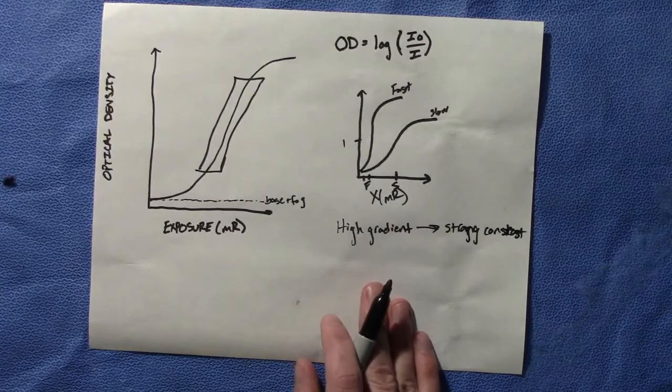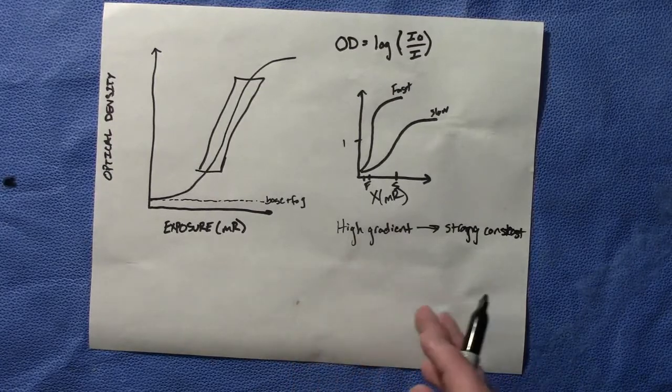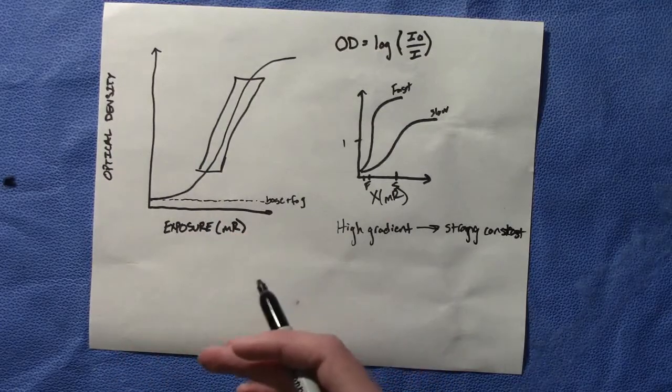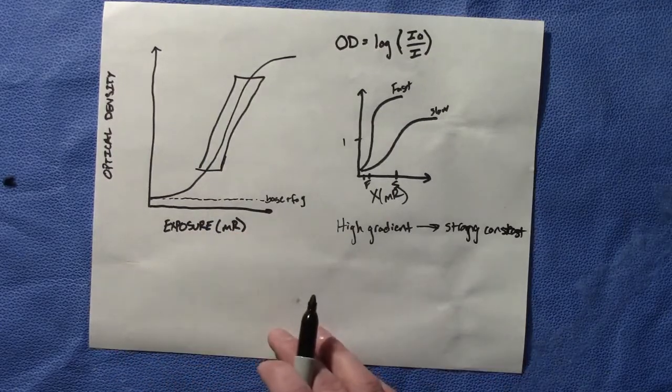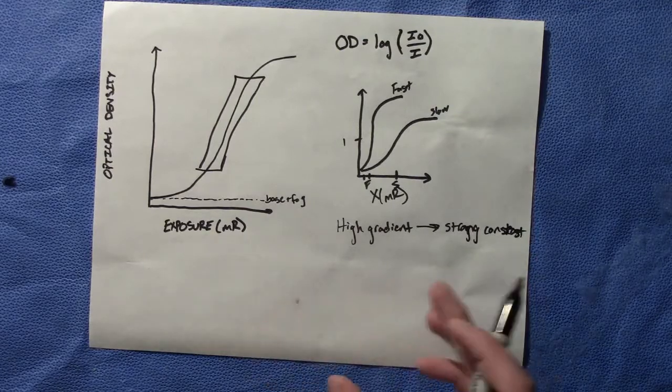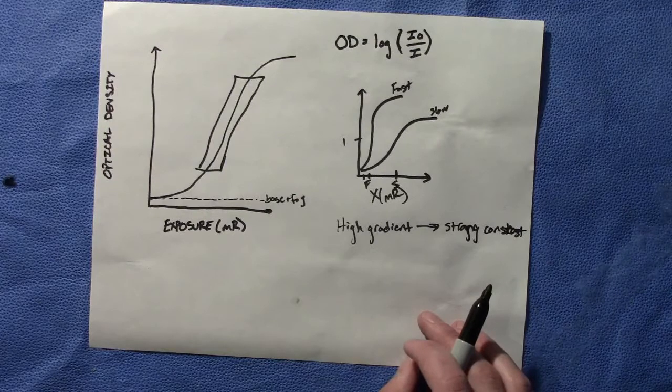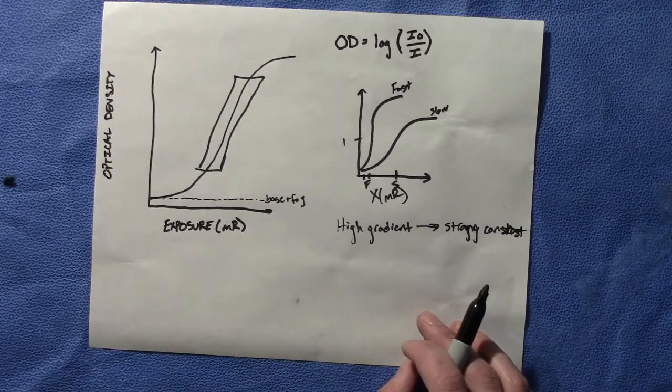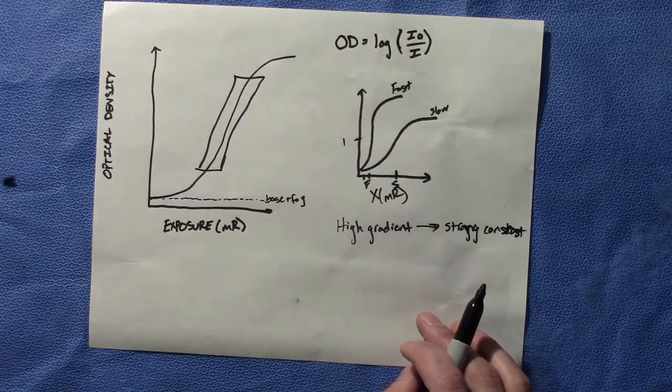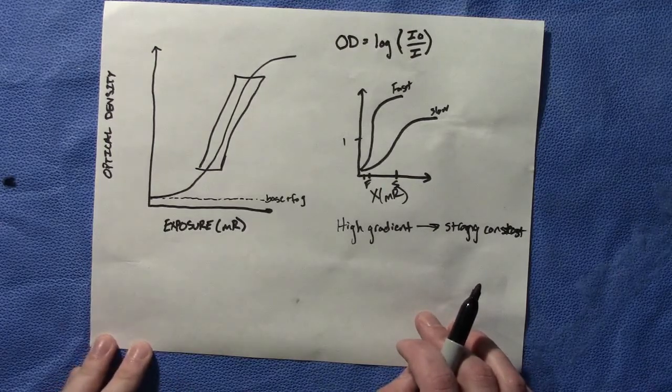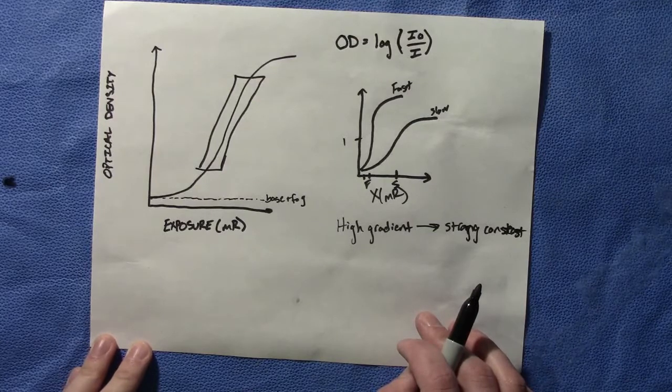Finally, latitude is the range of exposures that a film can accept and still produce usable contrast. You want a larger latitude because you can use a wider range of exposures. That is the H&D curve.